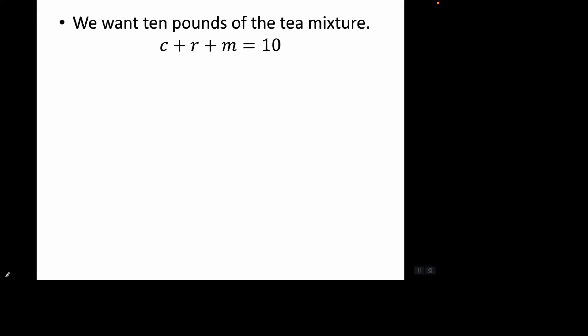We want 10 pounds of the tea mixture, so C plus R plus M equals 10. We want twice as much raspberry leaves as chamomile, so R equals 2C. Be careful, don't get it the other way around.